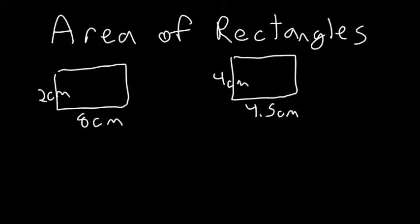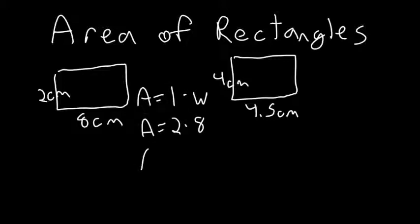Let's go over two more examples. We have two rectangles — the first one is 2 centimeters by 8 centimeters. Area equals length times width, so area equals 2 times 8, and 2 times 8 is 16, so our answer is 16 centimeters squared.